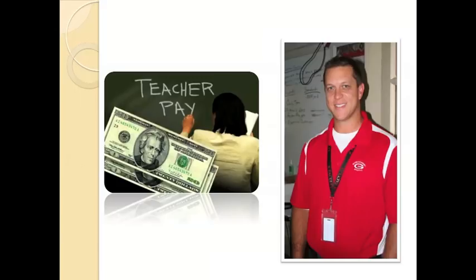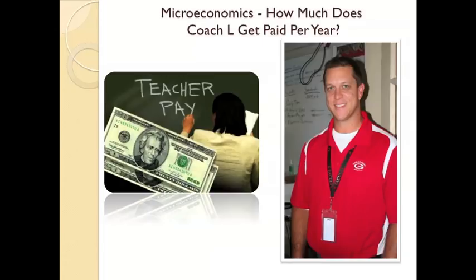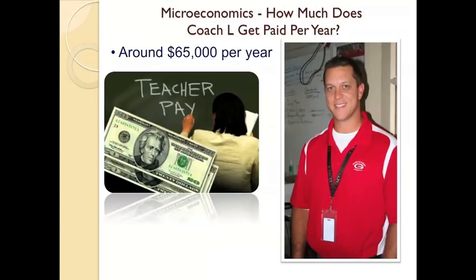If you were to ask me, what is your standard of living? In other words, what kind of lifestyle do you have? What are some of the things you can buy, some of the places you can go, some of the things that you can afford? You might ask me, how much do you get paid? This would be a good indication of my lifestyle, my standard of living, and the things that I can afford. So in the year 2013, the amount I get paid is right around $65,000 per year. This, of course, would be more like a microeconomics question because it reflects me individually, a smaller part of the overall economy.